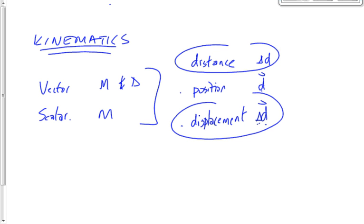Scalars and their vector equivalents will always have the same value until you change direction. When you change direction, the numbers become different.